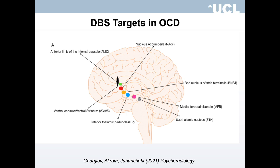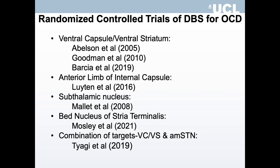The first use of DBS as a treatment for OCD was by Nuttin and colleagues using the anterior limb of the internal capsule as the target. Since then many other targets have been used to treat OCD. There have been seven randomized controlled trials of DBS for OCD with various targets: the ventral capsule/ventral striatum, the anterior limb of the internal capsule, the subthalamic nucleus, the bed nucleus of the stria terminalis, and a combination of targets.